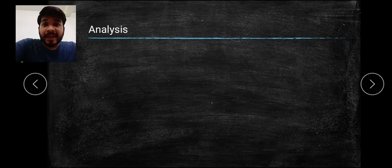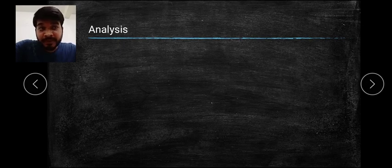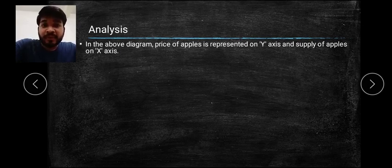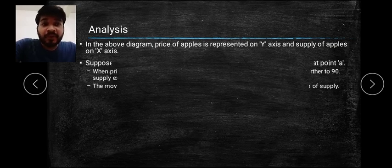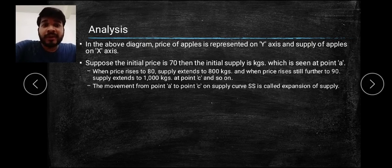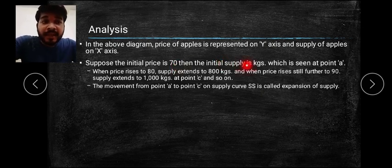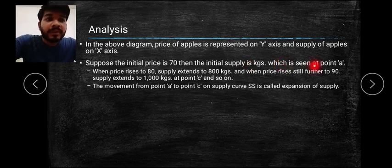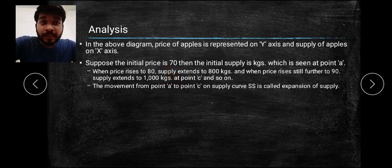Now let us analyze what we need to write when explaining this data, table, and graph in the exam where it comes for five marks. The first point to write is that the price of apple is represented on the Y-axis and the supply of apple is represented on the X-axis. Second, the explanation starts where the initial price is 70 and the initial supply is 600 kg, seen at point A.